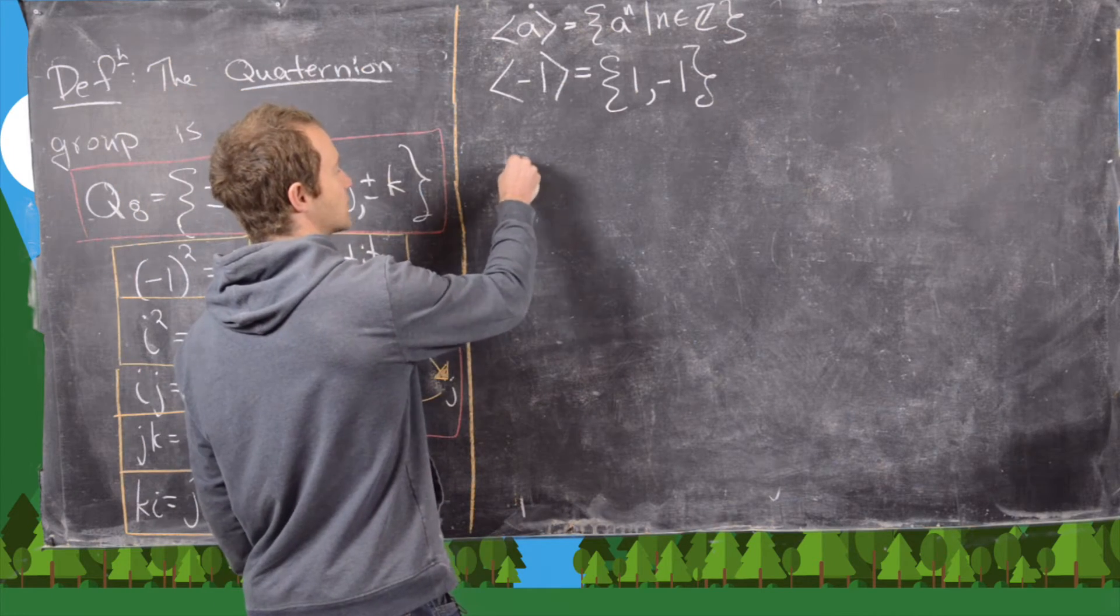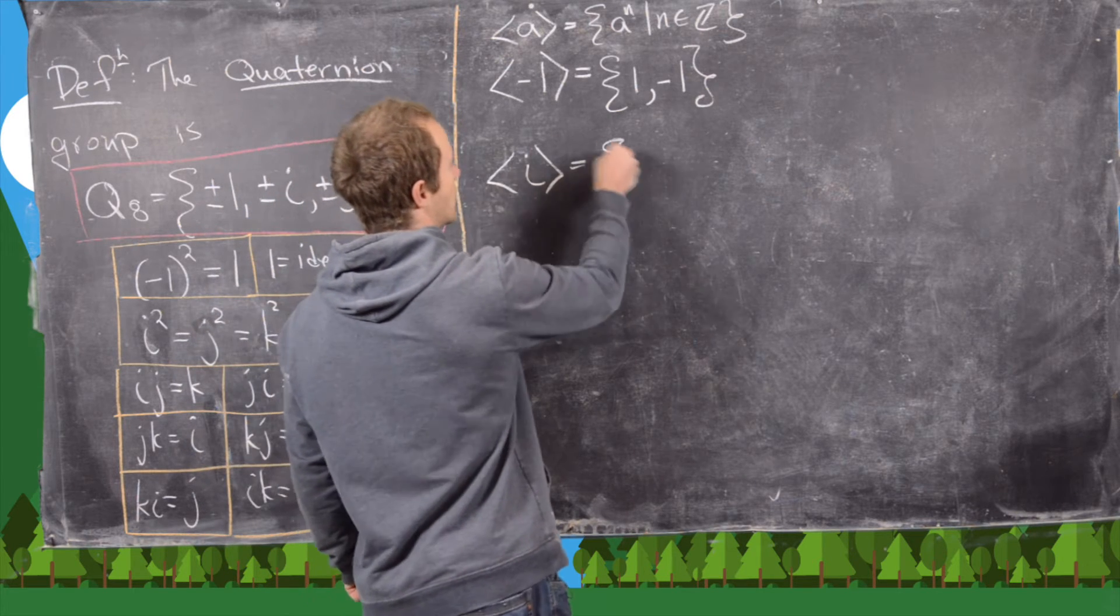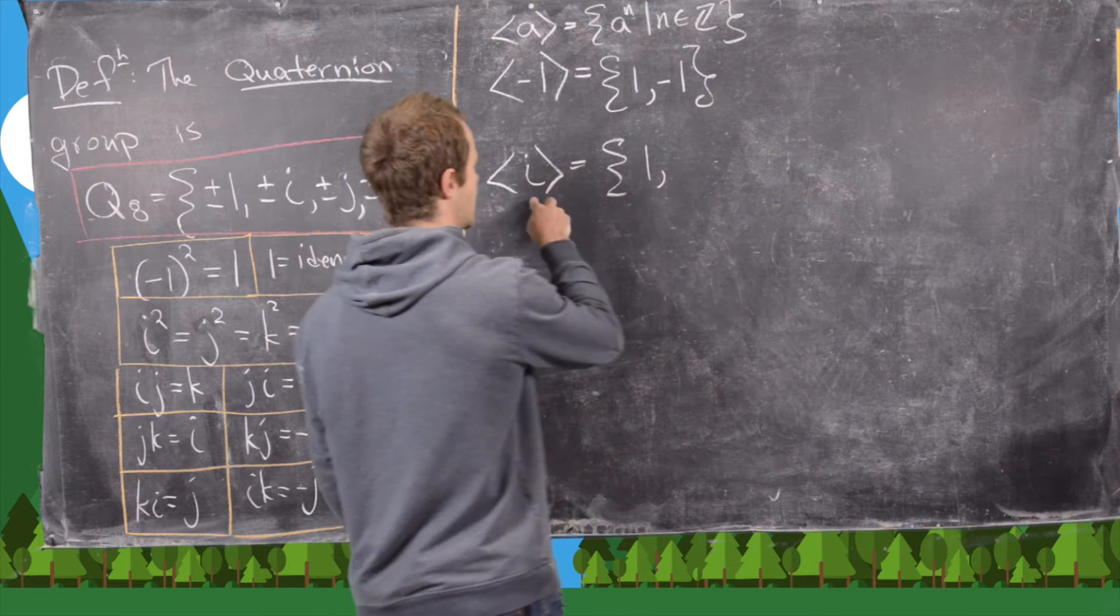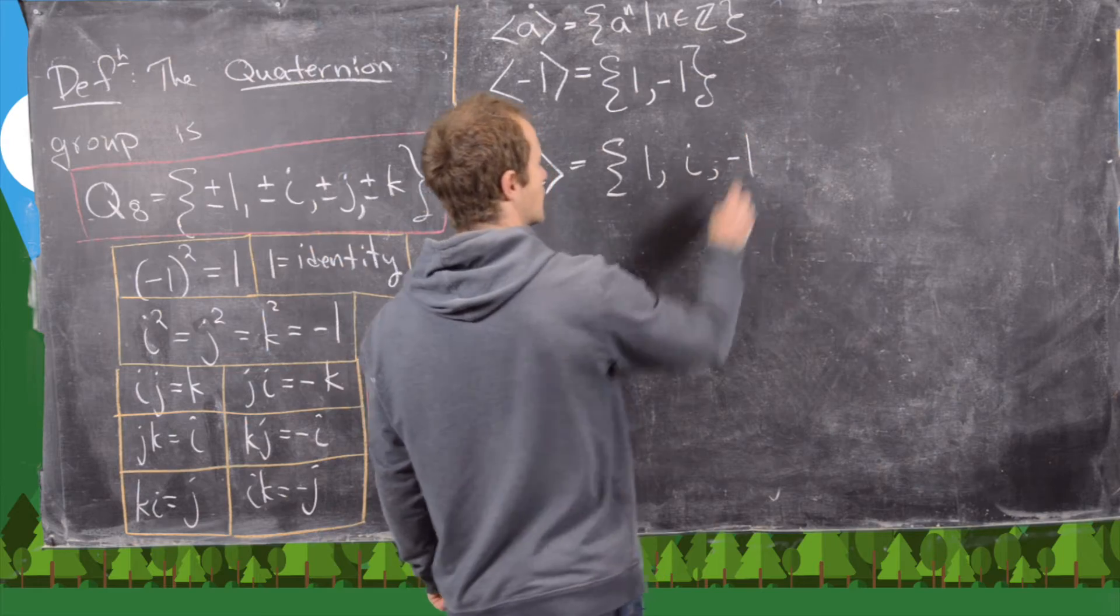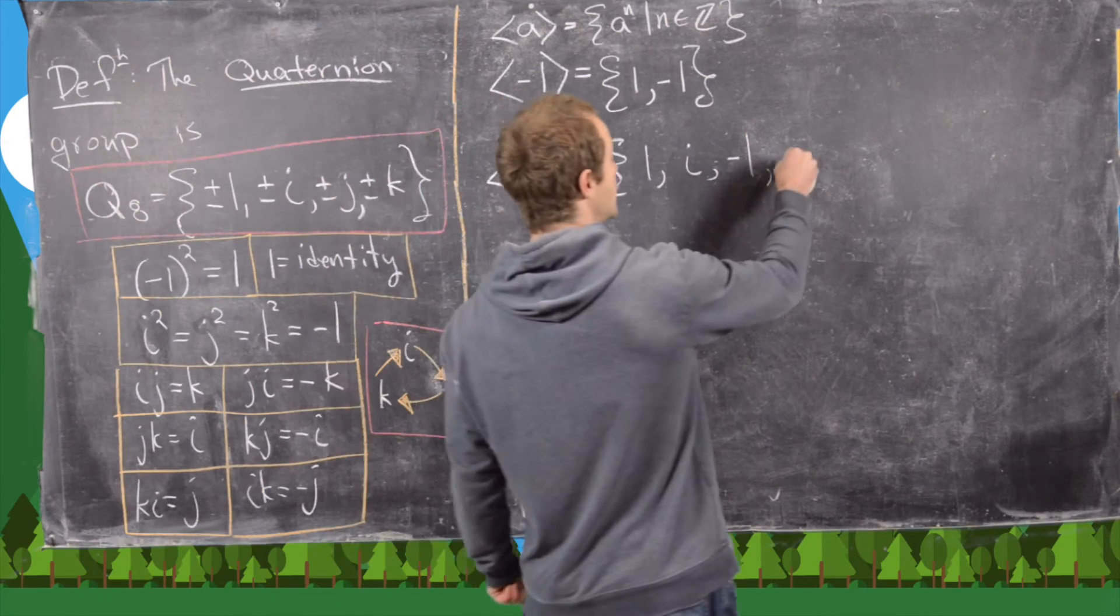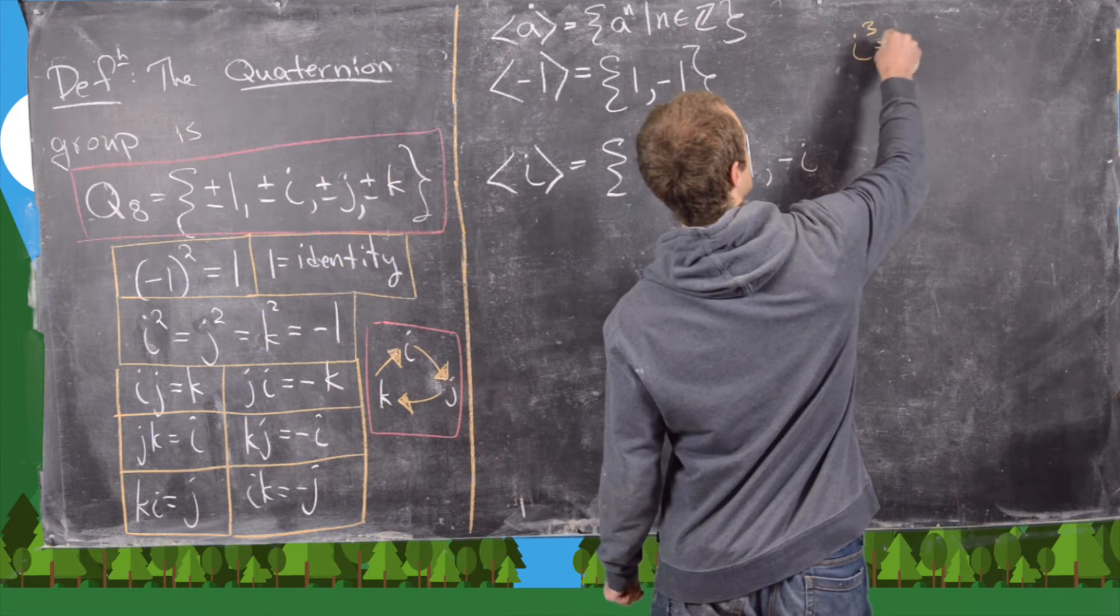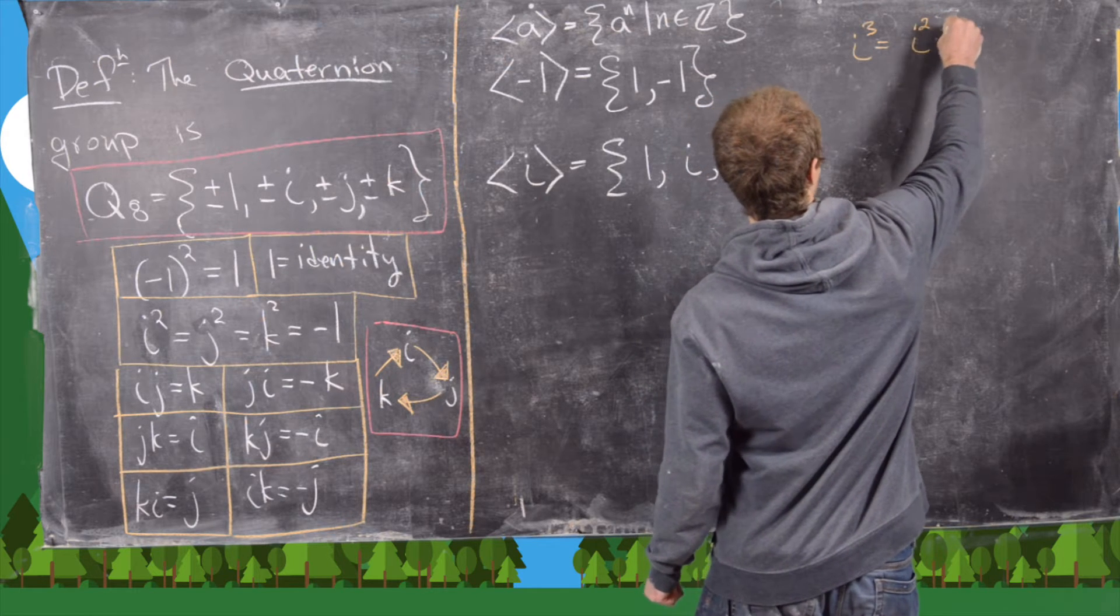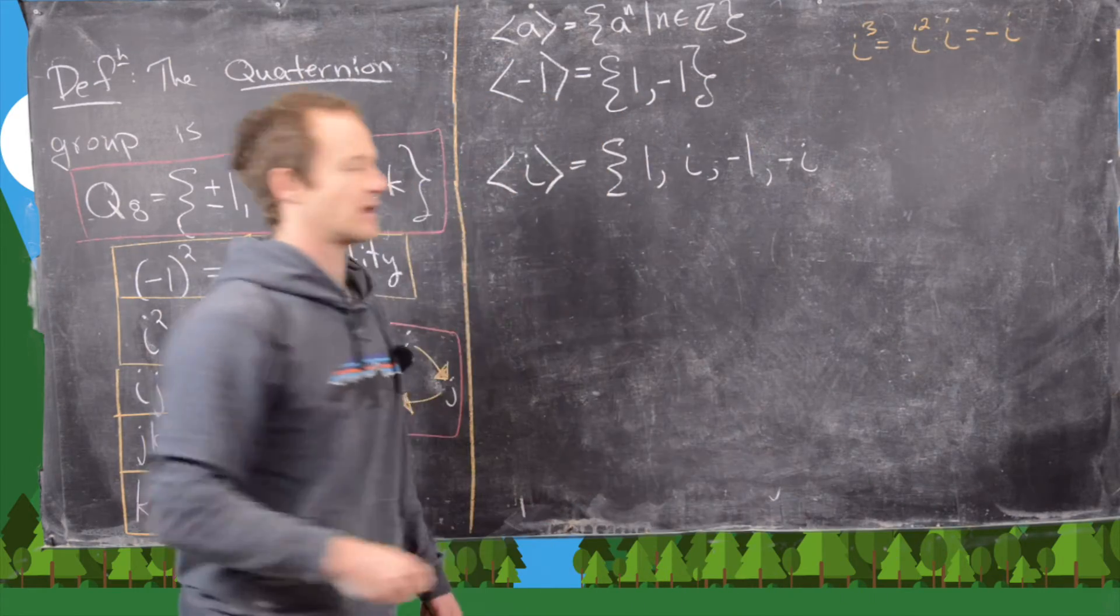Now let's look at the subgroup generated by i. So we'll have i to the 0th power, which is 1, i to the 1st power, which is i, i squared, which is negative 1, and then i cubed, which is negative i. Let's do that up here real quick. So we have i cubed, so that's going to be i squared times i, but that's negative i. Okay, good.